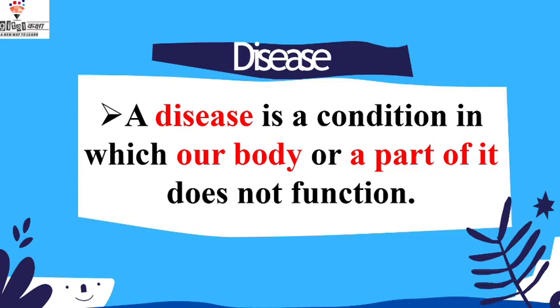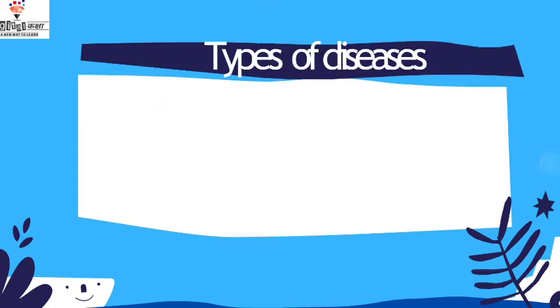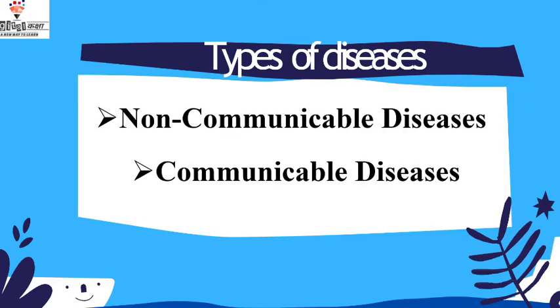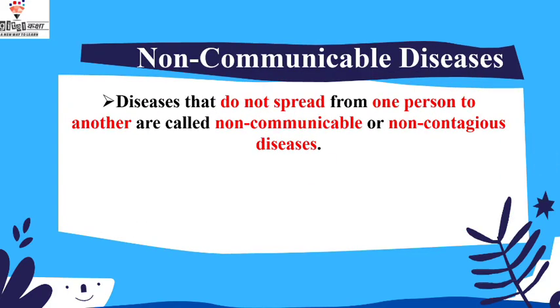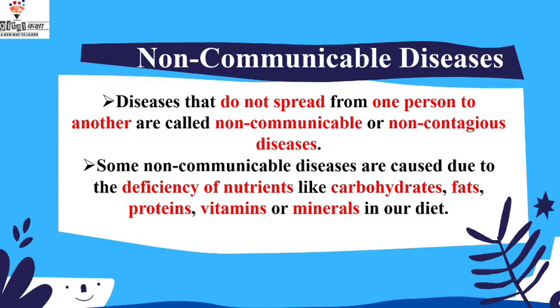If we say a car or a bike is broken and we don't take care of it properly, the same applies to our body — it functions just like a machine. If we don't take a proper balanced diet and don't provide nutrients properly, diseases occur. Diseases that do not spread from one person to another are called non-communicable or non-contagious diseases.